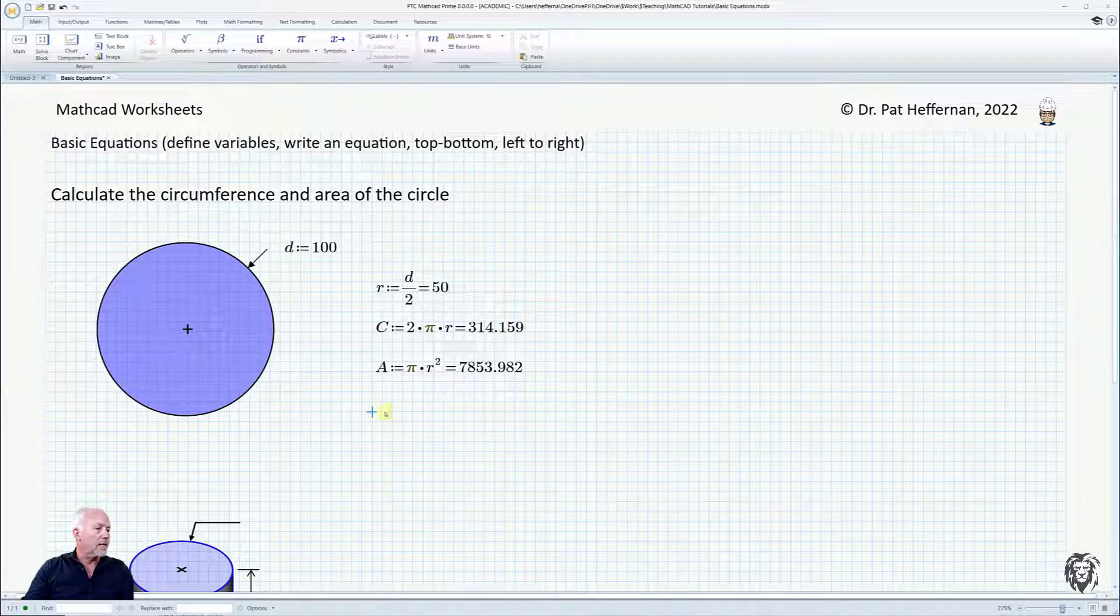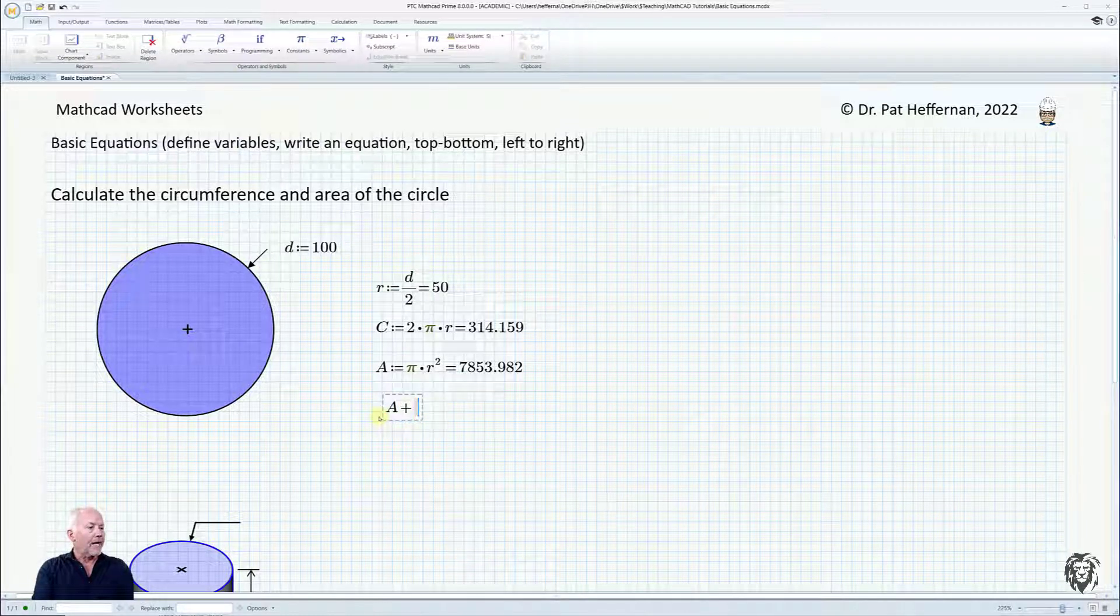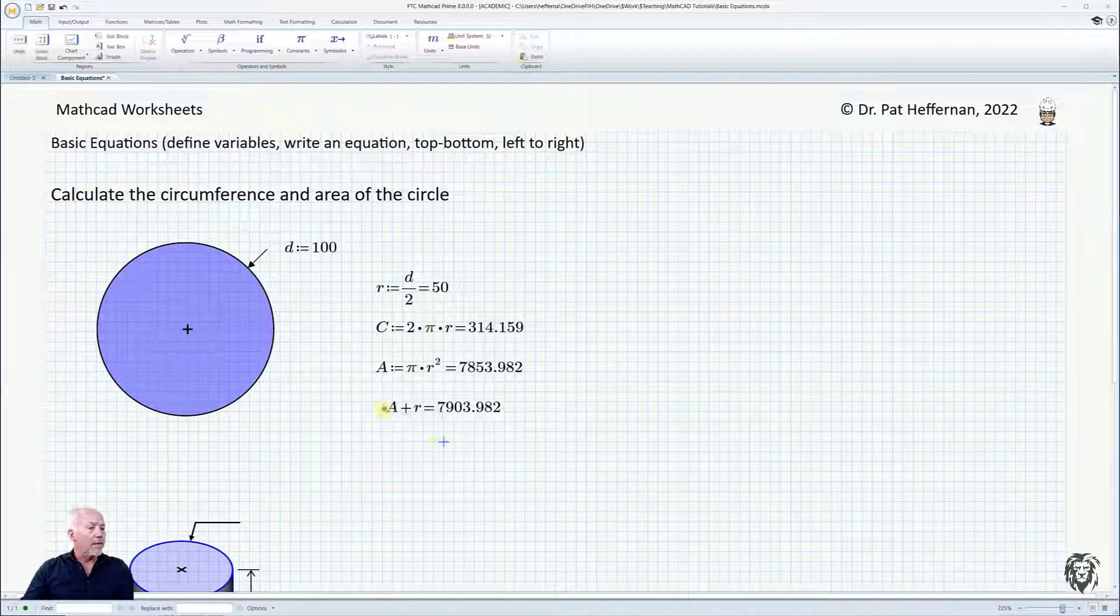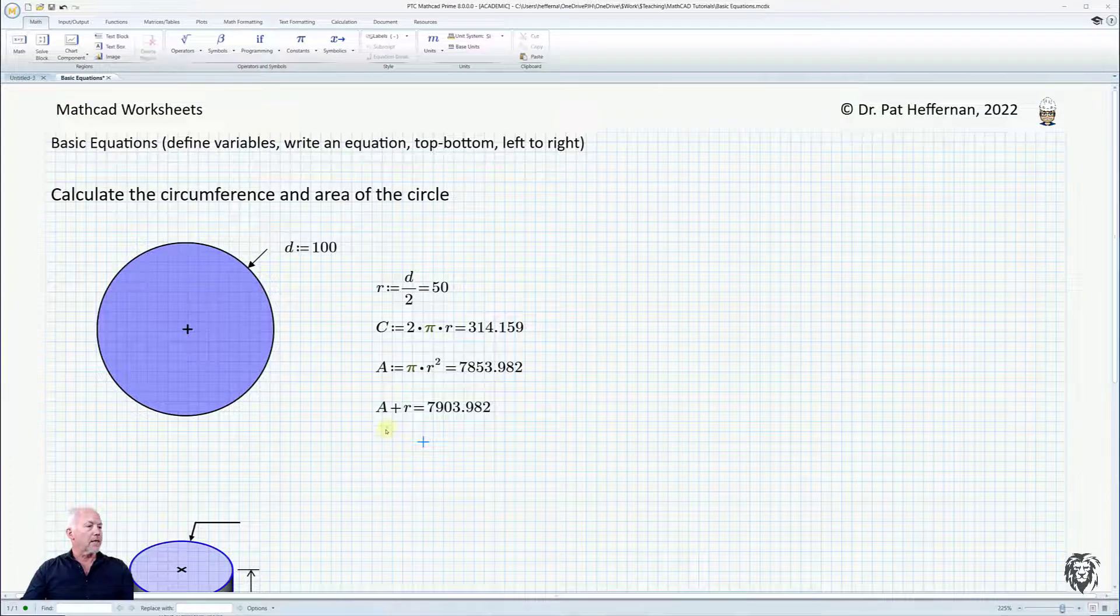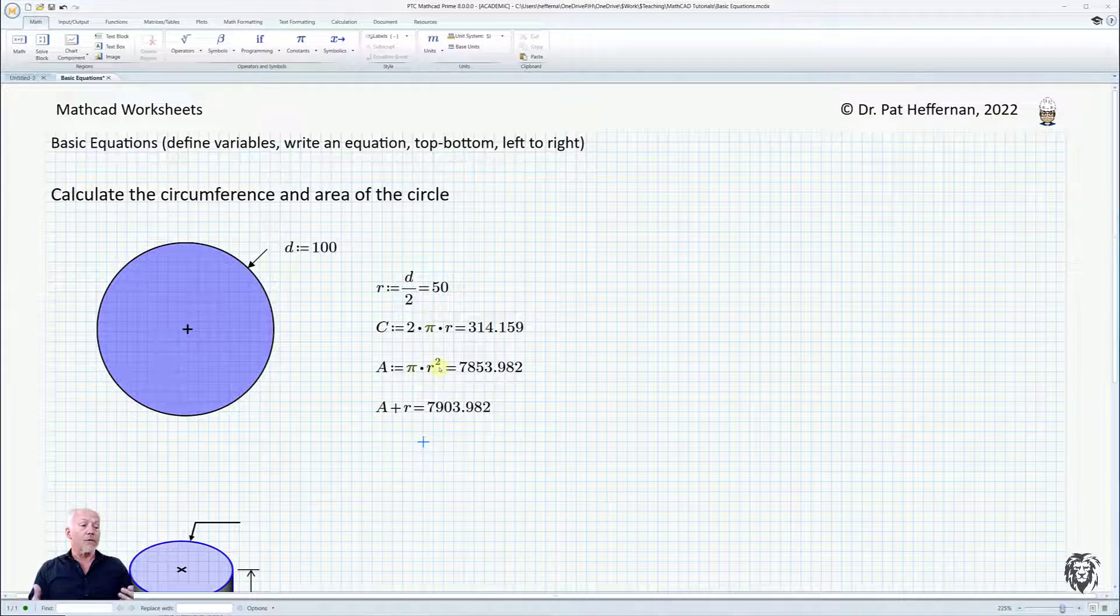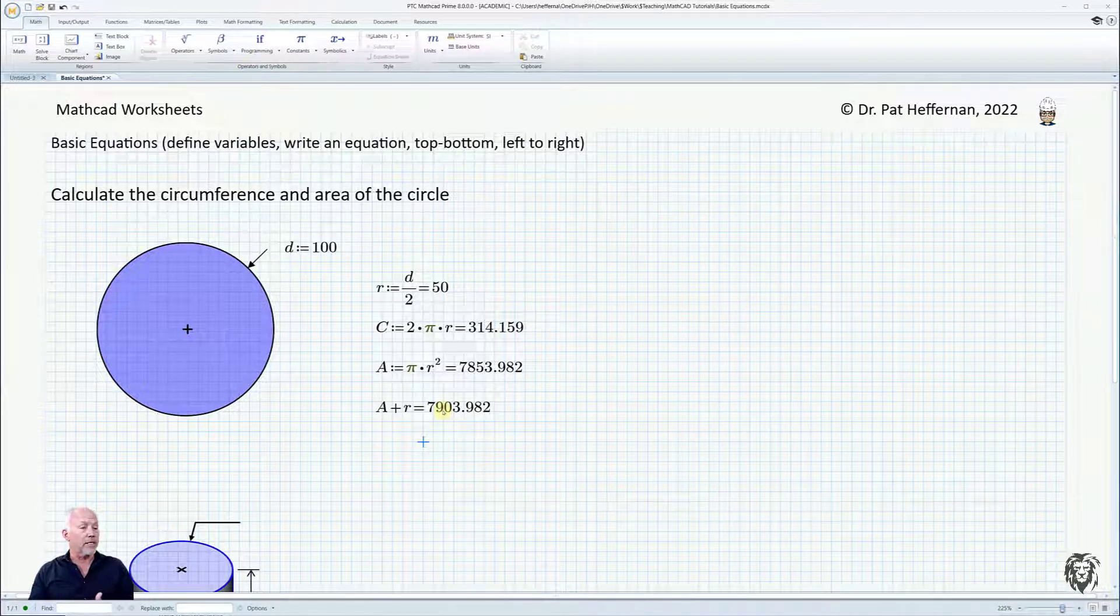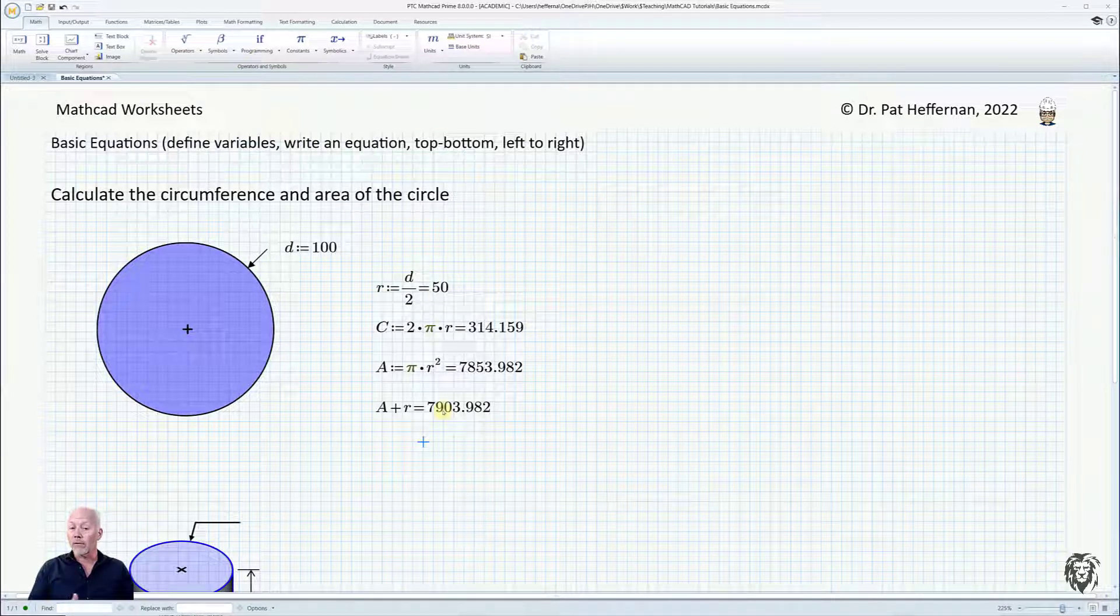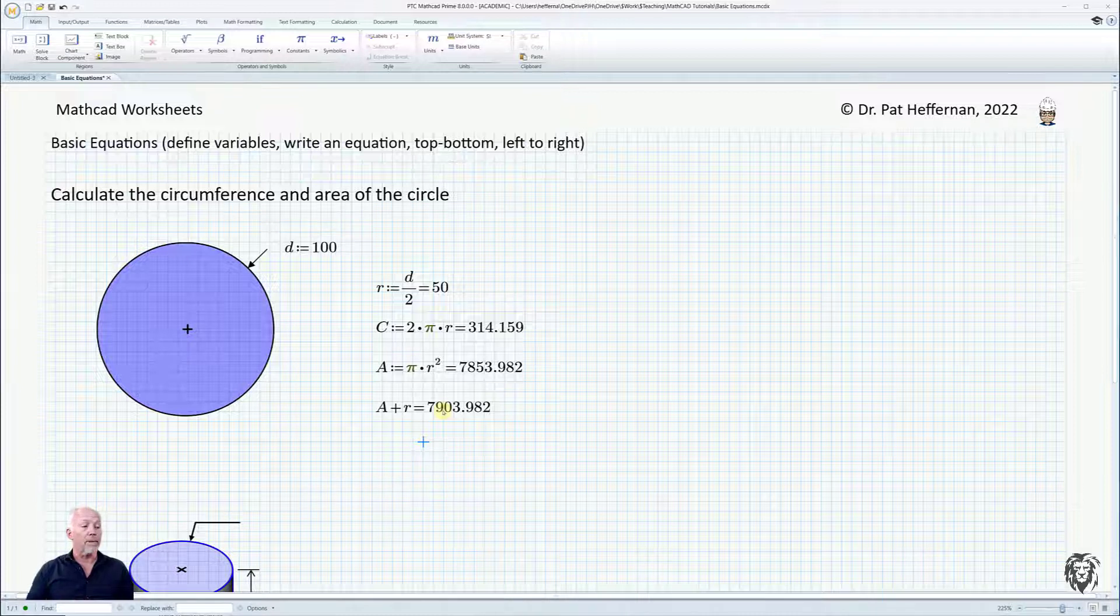Now one of the things I wanted to point out is that if I added my area to the radius, it's going to come up with a number. You should recognize that because areas are in some unit of distance squared and radius is a linear distance, those two are not compatible to be added together. But MathCAD doesn't know any better because we haven't defined any units. We're going to define units a little bit later and see how MathCAD behaves differently when it knows they're incompatible.